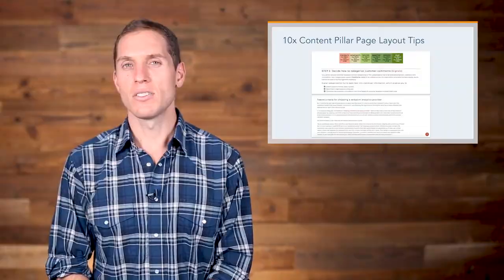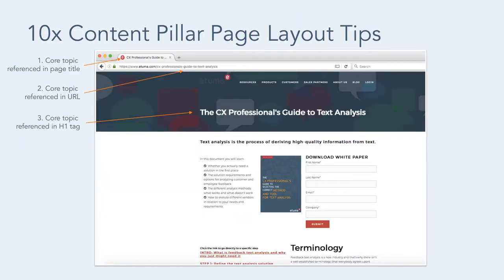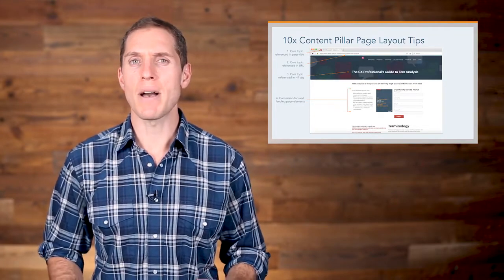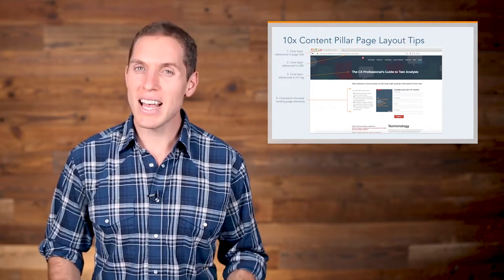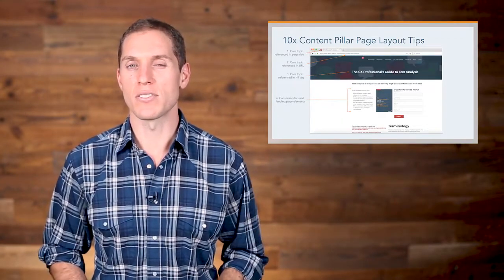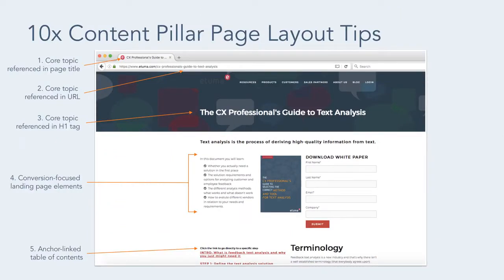Let's review each layout tip in more detail. Starting at the top left of the example with tips 1, 2, and 3: apply consistent on-page SEO best practices, referencing the core topic in your page title, URL, and H1 tag. Moving down to tip 4: include conversion-focused landing page elements — text to the left with bullet points to describe the offer's value, an image of the offer's cover in the middle, and a form to fill out and access the offer to the right. Insert the form directly on the 10x content pillar page, as doing so reduces the amount of conversion actions a reader needs to take to download the resource. If you're more comfortable with a dedicated landing page, insert a CTA on the pillar page to send readers there. Moving down to tip 5: add an anchor link table of contents below the conversion point with the line 'click the link to go directly to a specific section.' This lets visitors know they can view the content first before deciding to take it with them.